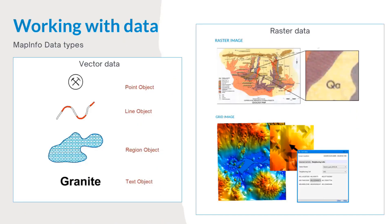I'm going to go very back to basics and speak about working with data. Probably most of you are familiar that Mapping for Discover has two main types of data. One is vector files, or what we call the Mapping for tables, and this can be point, line, objects, regions, or text. The second type of data will be raster data, which can be a raster image or a grid image.